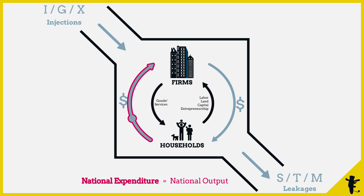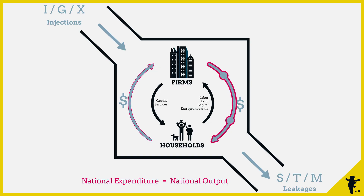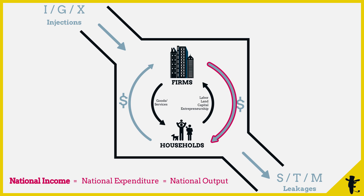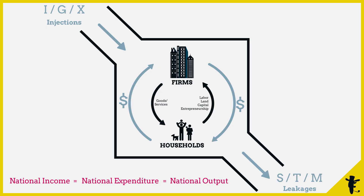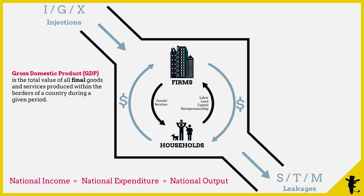Where does all this money spent come from? It comes from income made by the households. So this arrow — the national income — also equals national expenditure. We see that national income equals national expenditure equals national output. They're just in different stages of the circular flow of income.